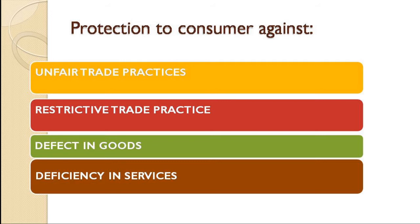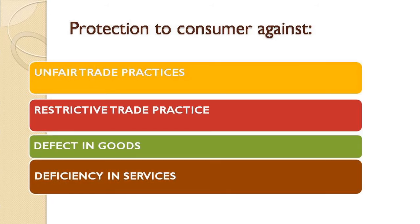Along with consumer rights, protection was also provided — such as protection against unfair trade practices. If a seller adopts any non-genuine means to sell a product, that is called an unfair trade practice. Restrictive trade practice means imposing unjustified costs that automatically raise the product price. Defective goods — if a product has a problem and is manipulated before being sold to consumers — and deficiency in services — services that are not as demanded or not proper — are also covered. The 1986 Act established district forums, state commissions, and national commissions where consumers could file cases within proper jurisdiction and receive remedy.